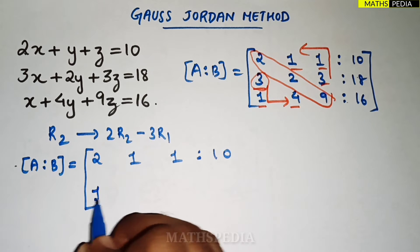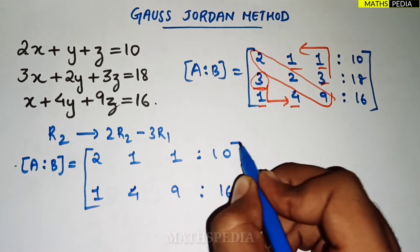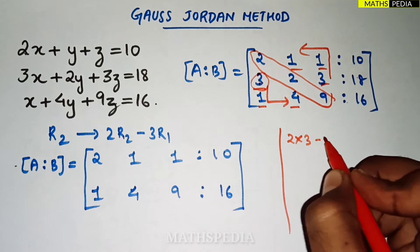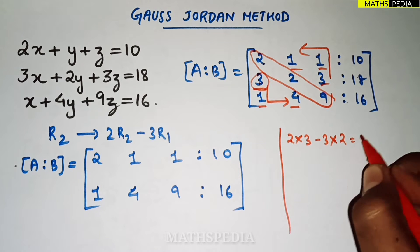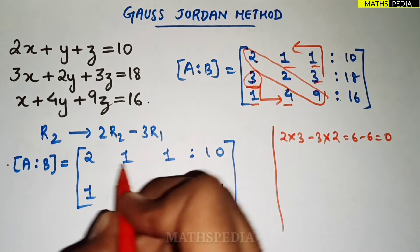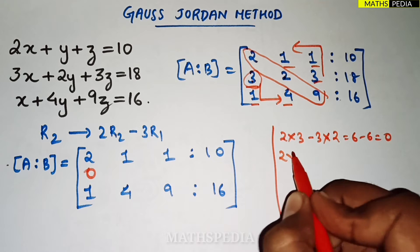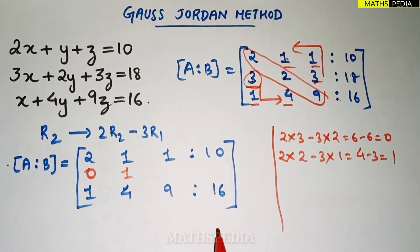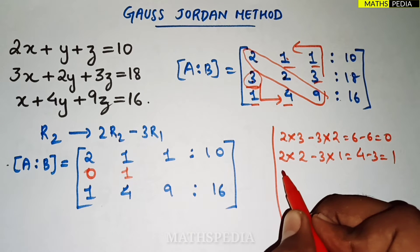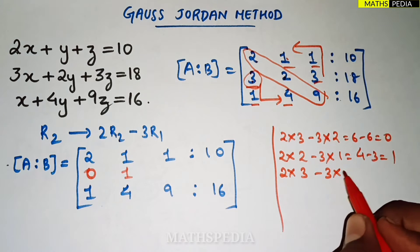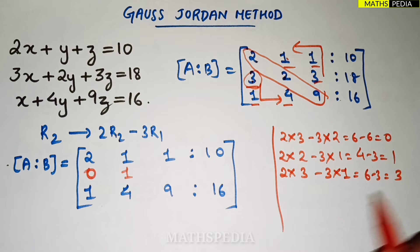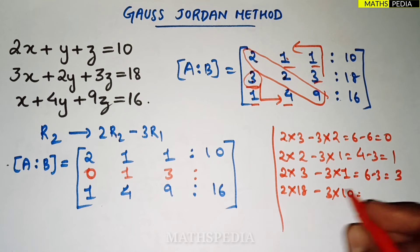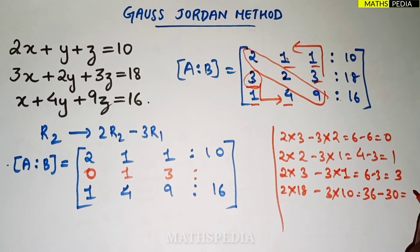Continuing the calculation for the new R2: for the second element, 2·2 − 3·1 = 4 − 3 = 1. For the third element, 2·3 − 3·1 = 6 − 3 = 3. For the constant, 2·18 − 3·10 = 36 − 30 = 6. So the new second row is 0, 1, 3 | 6.